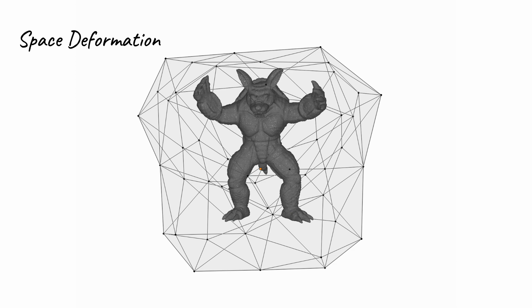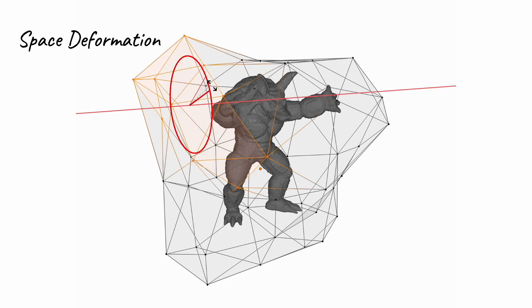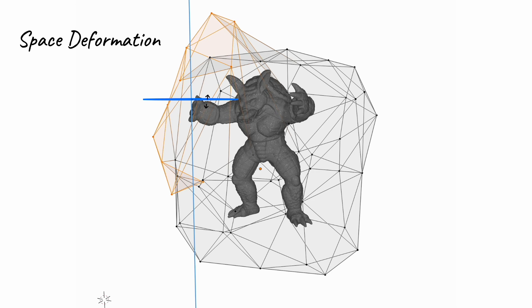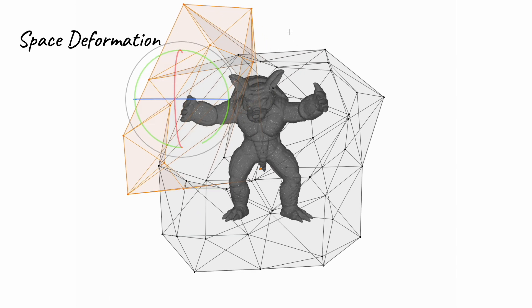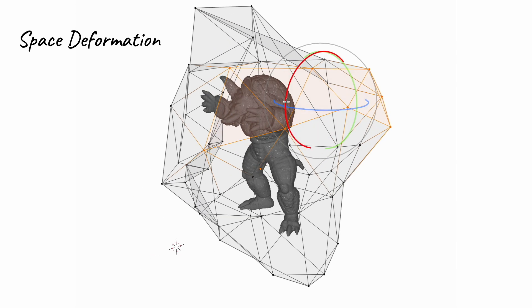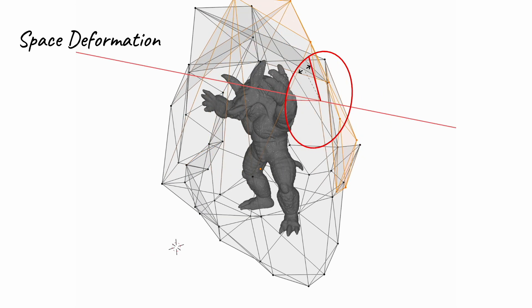This example demonstrates 3D deformation using cage-based approach, a method where a mesh's shape is altered using a simpler, enclosing mesh known as a cage. In this process, the target mesh's vertices are influenced by the cage's vertices. We showcase an N-caged armadillo 3D model, whose pose can be adjusted by repositioning the cage.